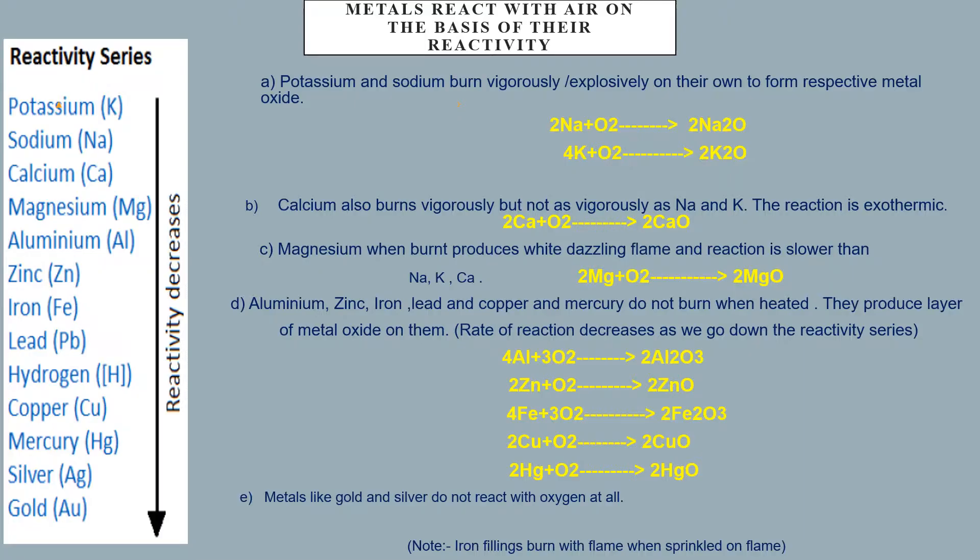There is a reactivity series as you can see in this slide: potassium, sodium, calcium, magnesium, aluminium, zinc, iron, lead, hydrogen, copper, mercury, silver, gold. As we go down the series, the reactivity of metals decreases.